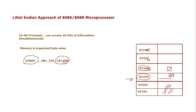What could be the alternative? We could store 57h at 07244h and 89h at 07245h — but 8086 does not follow that. In that case, the lower byte would go to the higher address and the higher byte would go to the lower address, which is not Little Endian. That approach is known as the Big Endian approach. But 8086 follows the Little Endian approach: lower byte goes to lower address and higher byte goes to higher address.